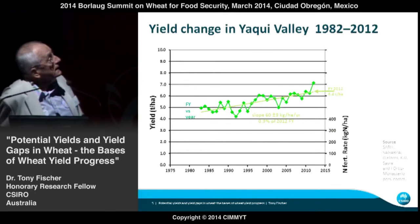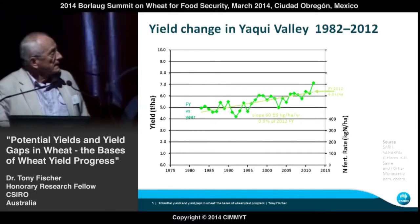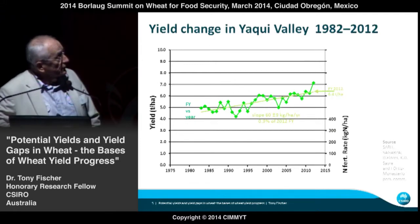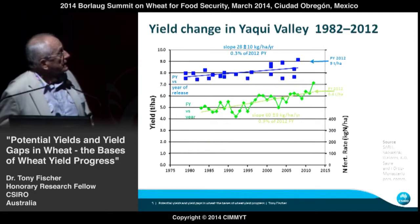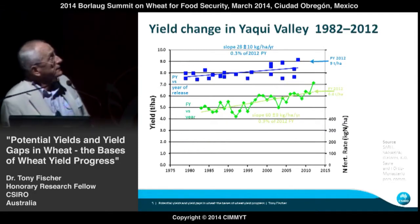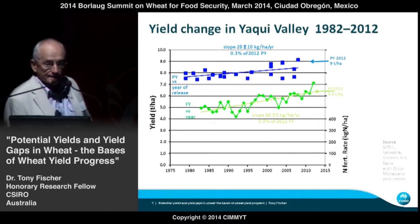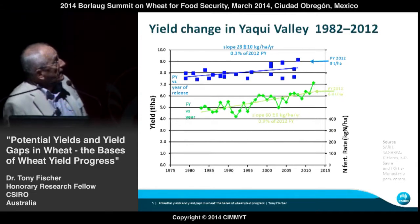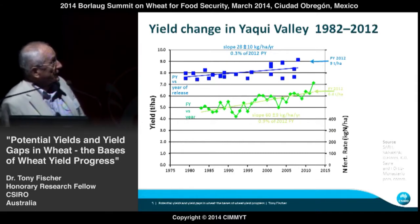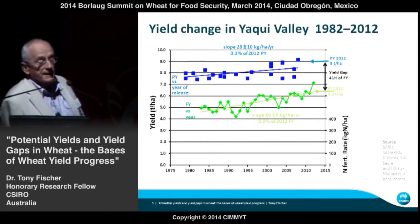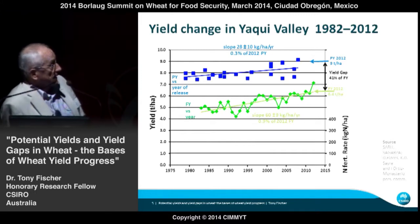From variety trials at the station under best management, plotted against year of release, the rate of progress is only about 0.3% of potential yields in 2012. We can also talk about a yield gap of about 41% — expressed as a percentage of farm yield. It looks like the yield gap is closing a little bit over that period, partly related to nitrogen rates continuing to go up.